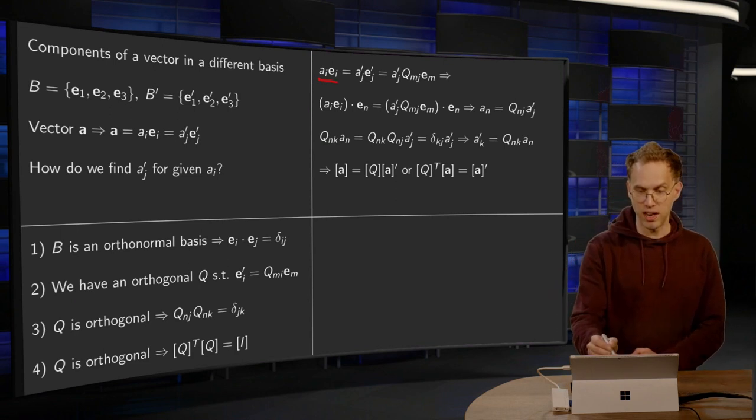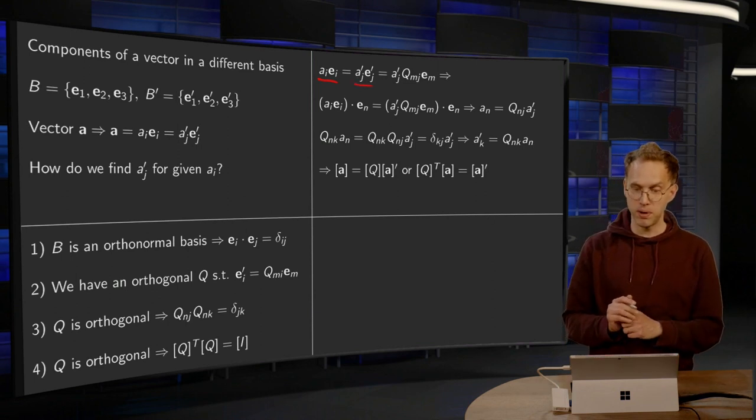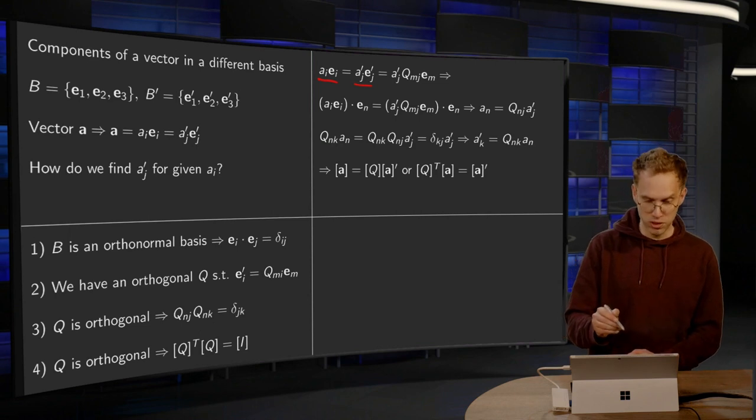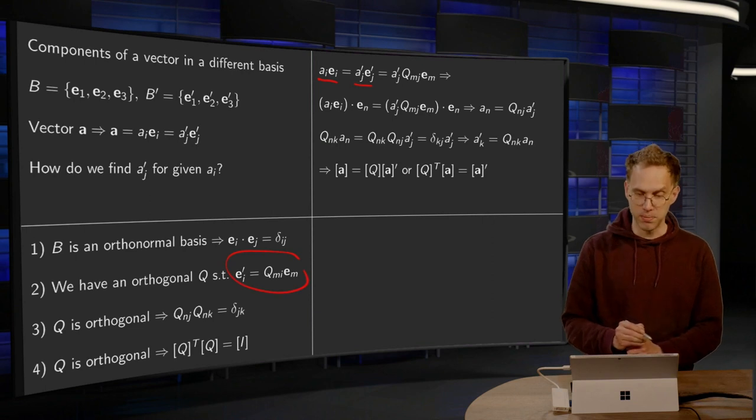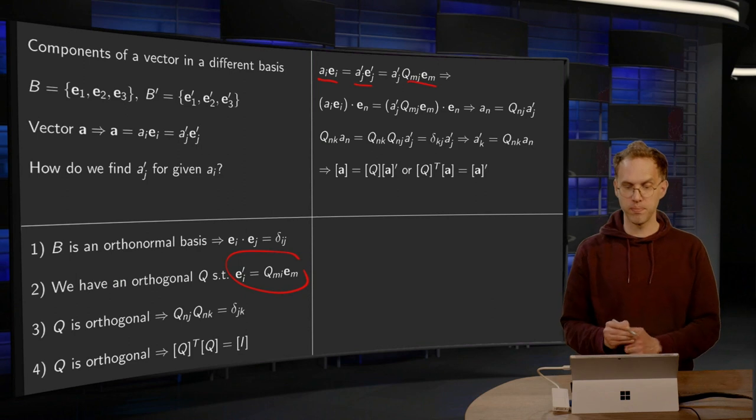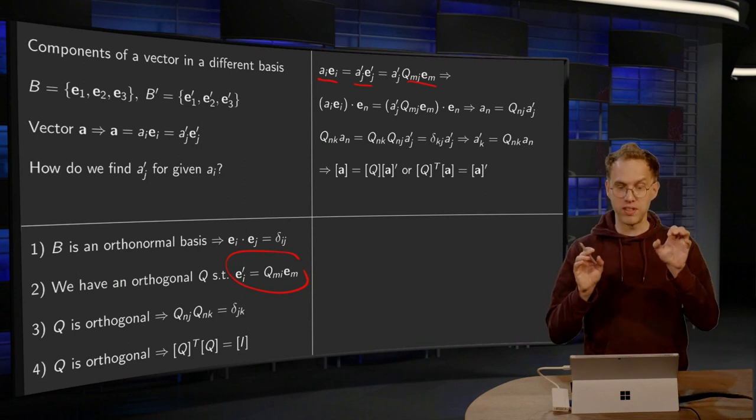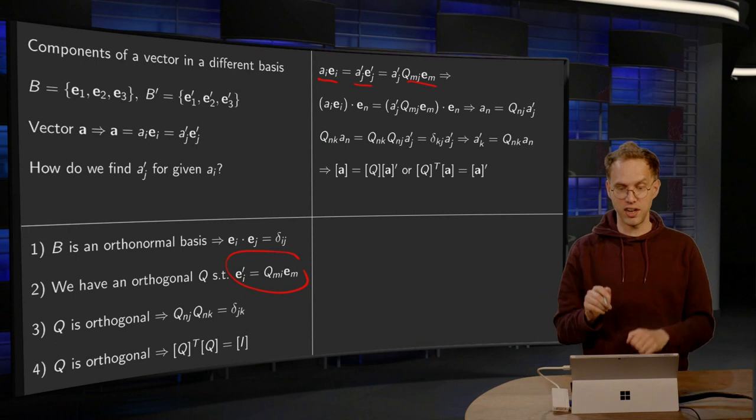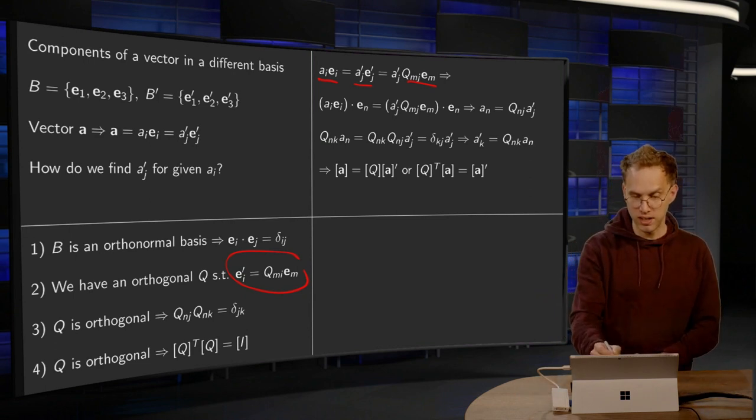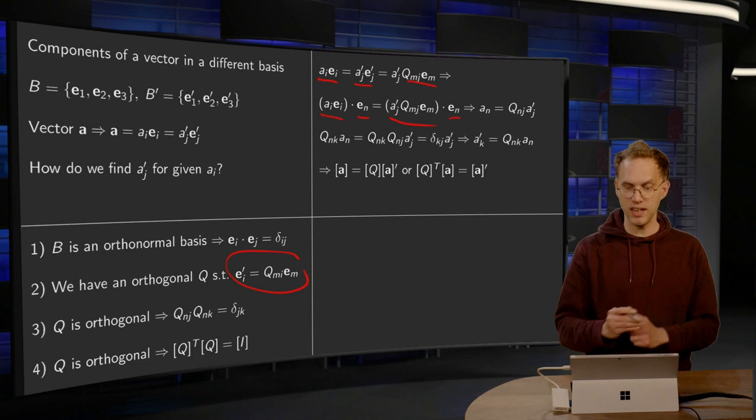So, we have our vector A, so AI EI equals AJ' EJ'. Now, first of all, we use this rule 2, where we have AJ' equals QMJ EM, that's over here. Then the next step is to take the inner product with EN on the left and right hand side of the equation, so on the left hand side we get AI EI inner product with EN, and on the right hand side we get the rubbish, and we take the inner product with EN.